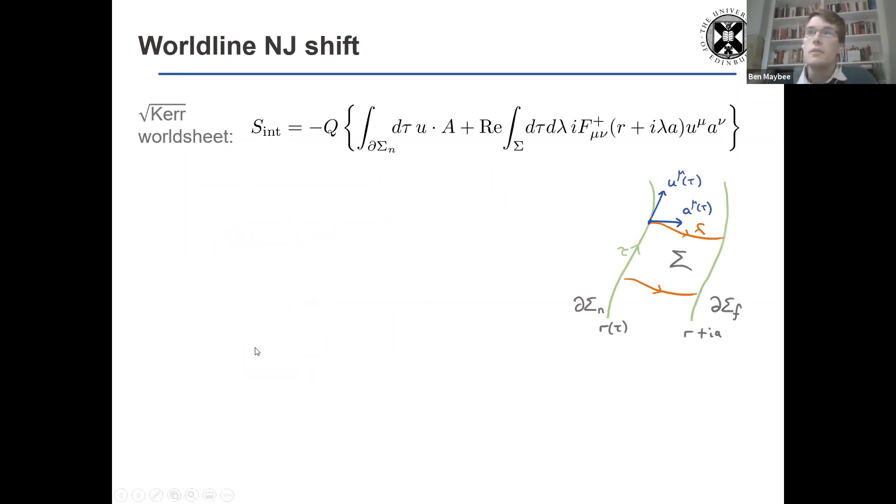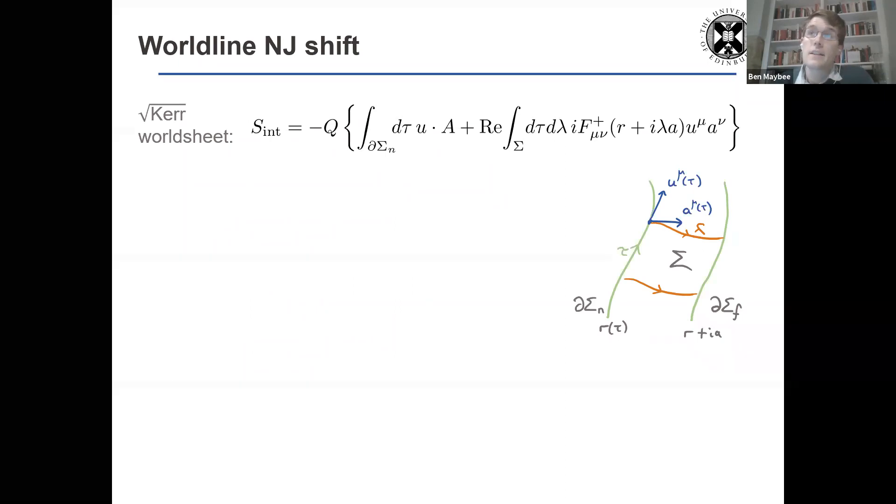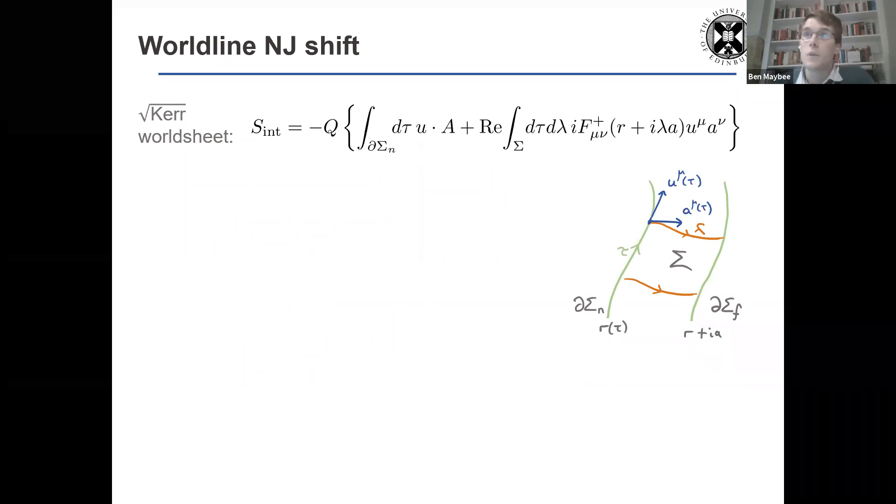So Donal's shown you and argued that we can write the action for a root curve, effective action for root curve in this worldsheet form. So we have a near boundary, sigma n, the far boundary, which is where the Newman-Janis shift is, and then geodesics in this complex extension in the direction of the spin vector with the coordinate lambda.